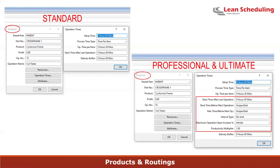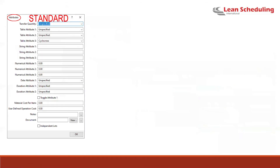The Professional and Ultimate versions include the same fields with many additions — advanced timing techniques. In addition to slack time after last operation, there's slack time before the next operation, and maximum time before next stop. For example, in the metals industry, if you heat something up and need to form it, you can't wait four hours — you'd set max time before next stop to 10 minutes. There's also interval type (beginning or end of job), maximum operation span, and a productivity multiplier allowing two people on a job to halve the time.